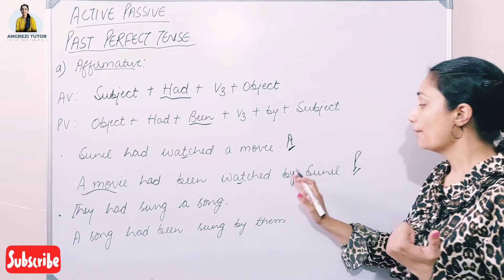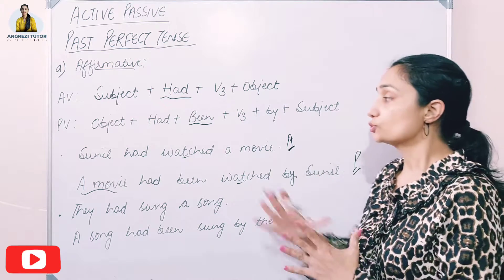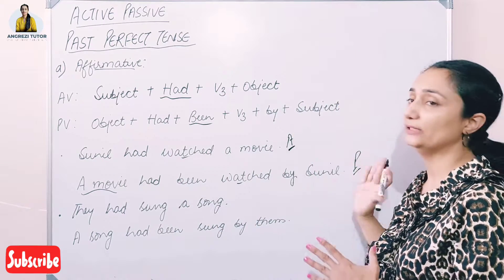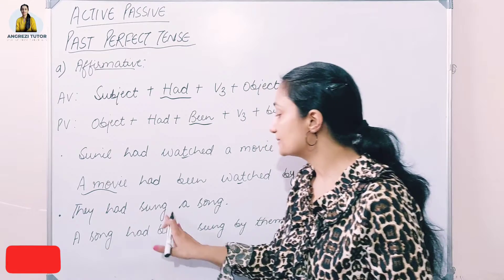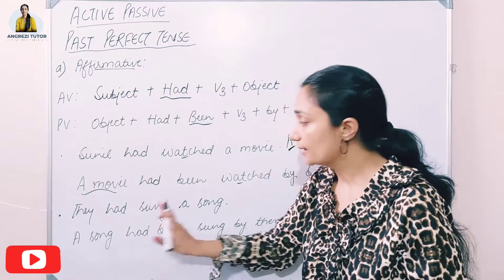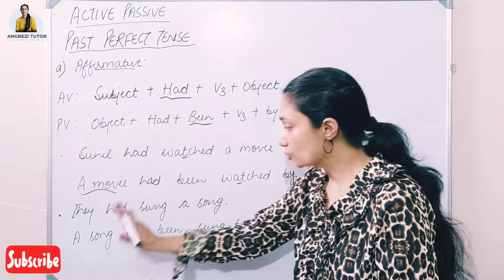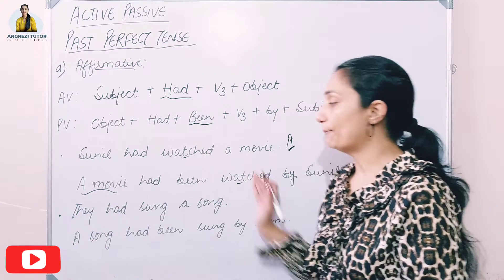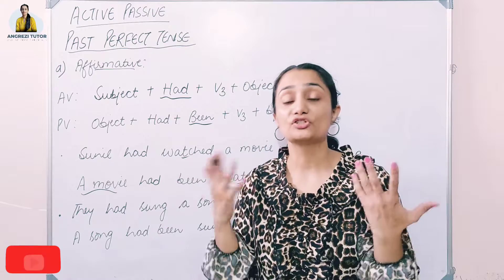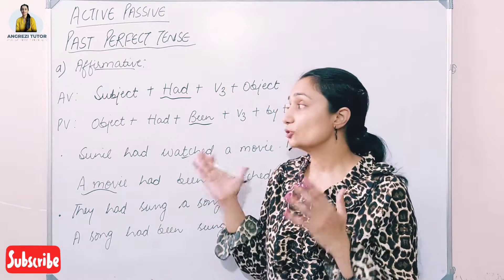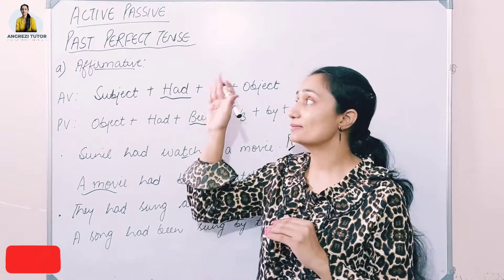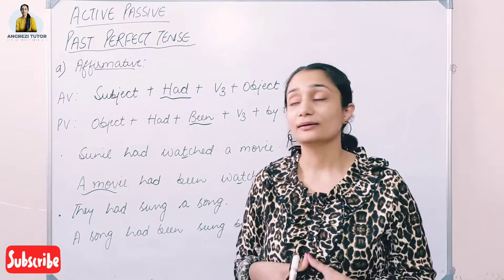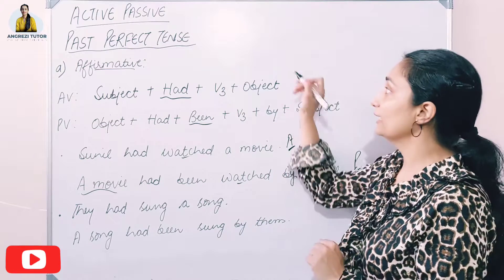The passive becomes: 'A movie had been watched by Sunil.' Second example: 'They had sung a song.' — sing, sang, sung — passive: 'A song had been sung by them.' Note the pronoun changes: they → them, he → him, she → her — as already discussed in earlier videos.